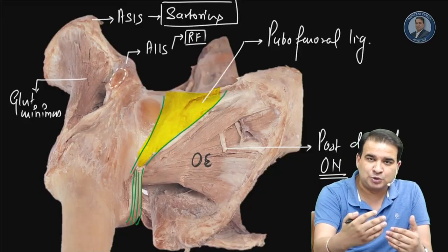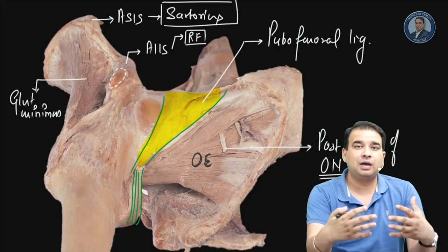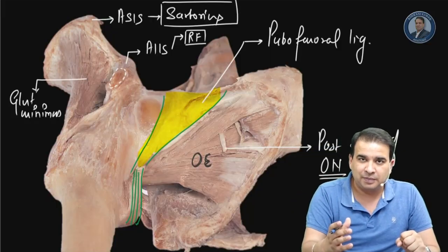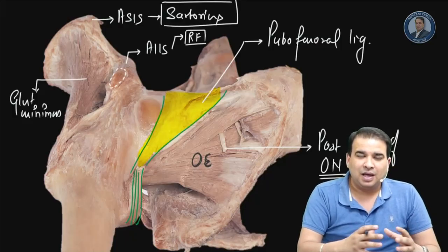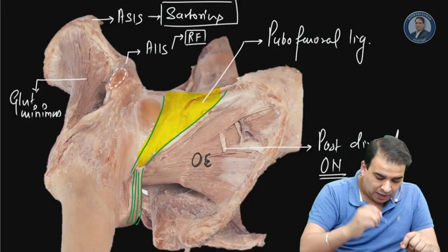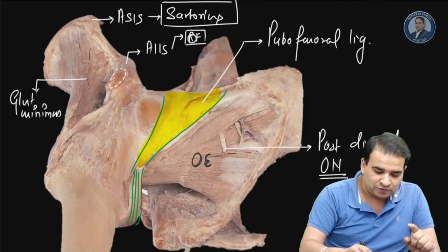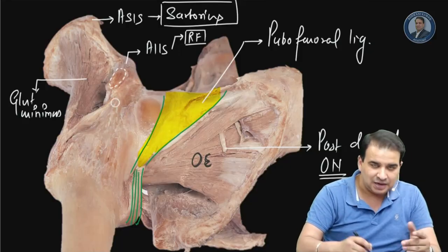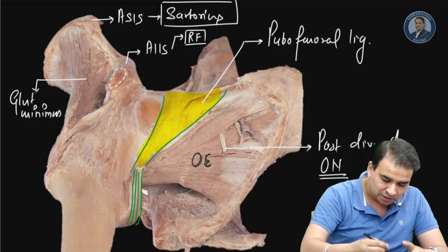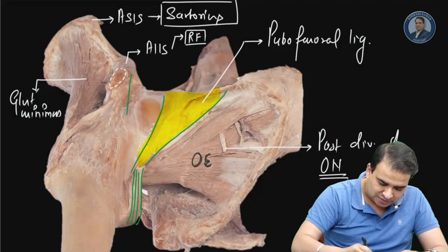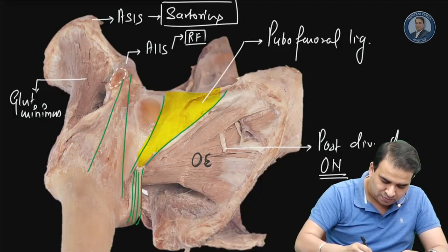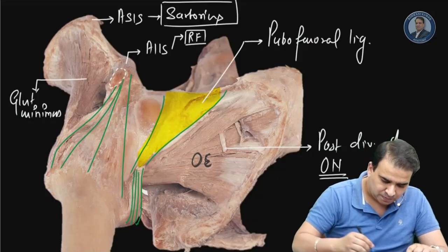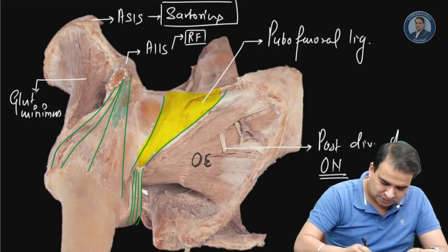The main ligament in front of the hip joint - responsible for preventing the trunk from falling back in the erect standing posture - is the iliofemoral ligament, also called the ligament of Bigelow, the strongest ligament in the body. The anterior inferior iliac spine gives attachment to this ligament in its lower part. It is an inverted Y-shaped ligament with a vertical band and a horizontal band.